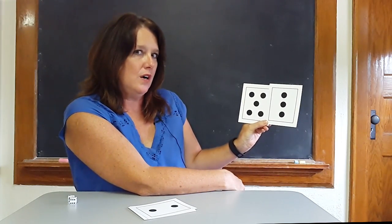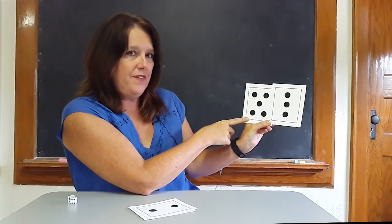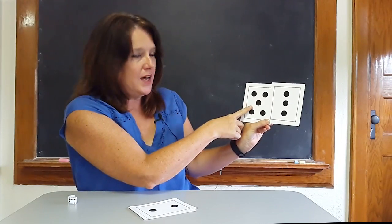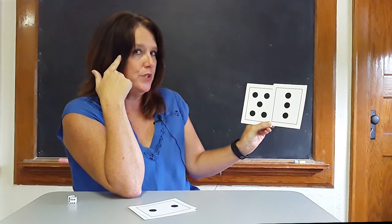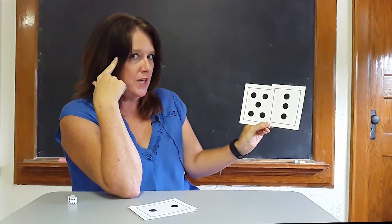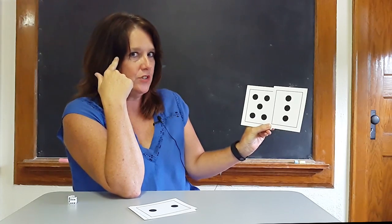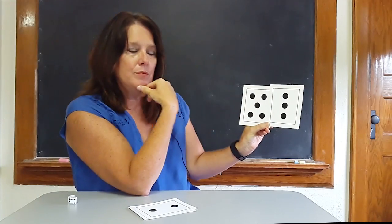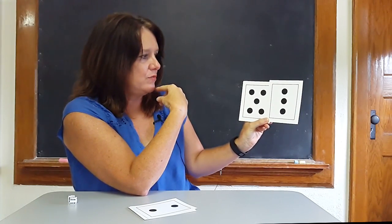Now, which card has the most dots? Hopefully they would see that the five has more dots than the three. So we would take five and put it in our head. We're going to hold the five in our head. Boys and girls, don't forget it. What number's in your head? Five. And then we're going to start with five and count on: five, six, seven, eight. Boys and girls, how many dots are on the two cards? Eight. That is right.